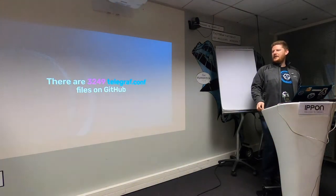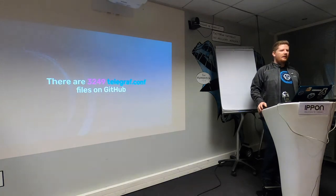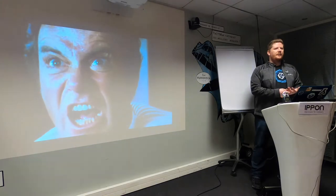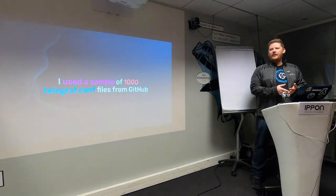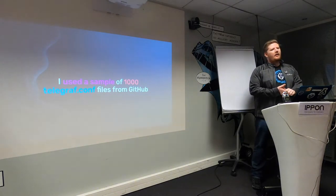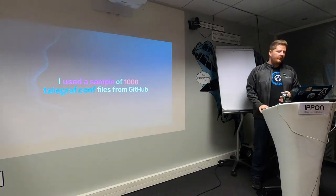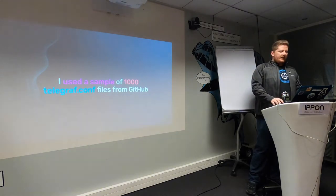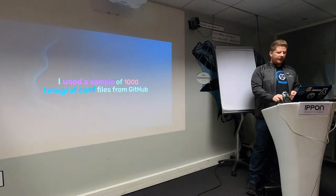So I did what any developer would do: I went to github.com, searched for telegraf.conf, and found 3,249 files, which I thought was great. Unfortunately, GitHub doesn't allow you to pull down 3,249 files from their API, so I used a sample of 1,000, which was the maximum I could get. No matter what I did to my search terms, I could never get more than the first 1,000 telegraf.confs. So we're going to consider this a sample, and I'll share what I found from analyzing all of these configurations.